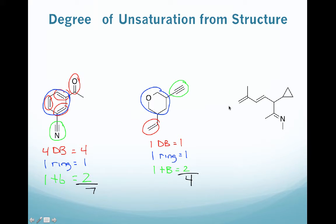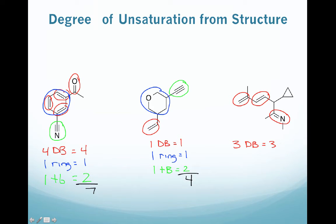For our final molecule in this set: we have 1 alkene double bond, another alkene double bond, and an imine double bond. Don't let the nitrogen throw you off — it's still a double bond, so it counts. That gives us 3 double bonds and 3 unsaturations. We also have a 3-membered ring, giving 1 more unsaturation. There are no triple bonds, so in total we have 4 unsaturations from the double bonds and the ring.